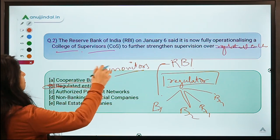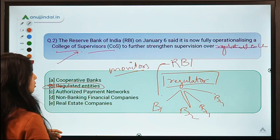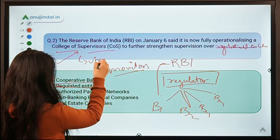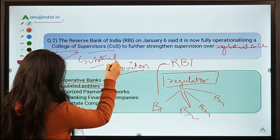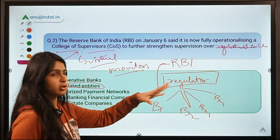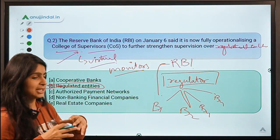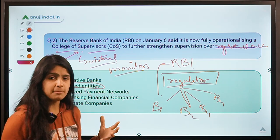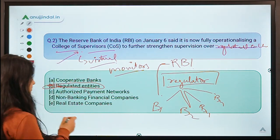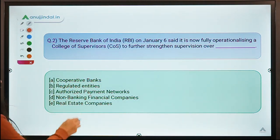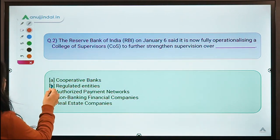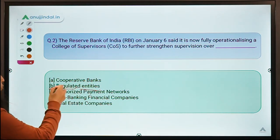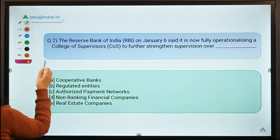RBI has now fully operationalized the College of Supervisors, which was earlier working in a virtual mode. They are letting it work on an expanded scale at full potential, wanting to regulate all entities that come under RBI — that is why it is called supervision over regulated entities.